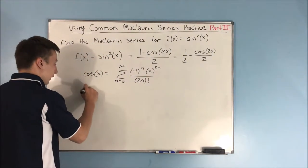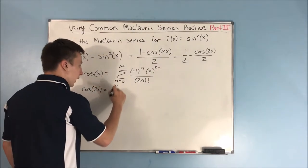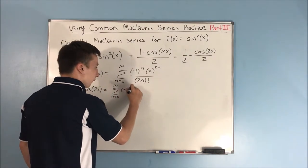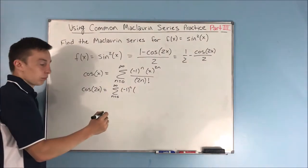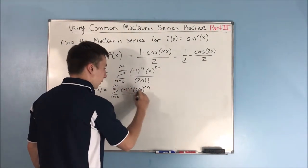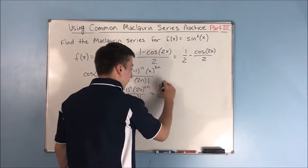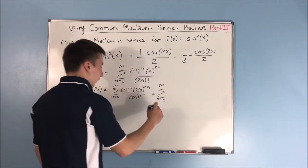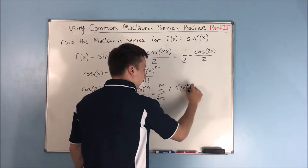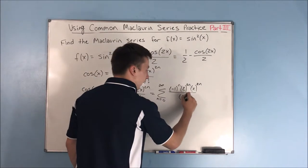Now we have cosine of 2x instead of x. So that's going to be the sum from n equals 0 to infinity of negative 1 to the n times 2x to the 2n over 2n factorial. Splitting it apart, that equals the sum from n equals 0 to infinity of negative 1 to the n times 2 to the 2n times x to the 2n over 2n factorial.